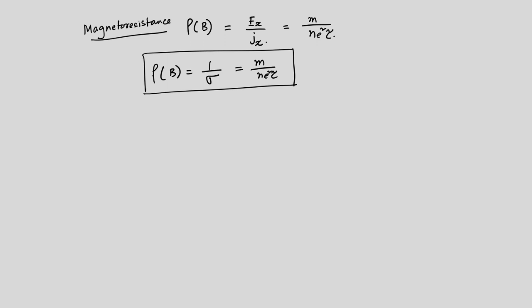The magneto-resistance ρ(B) = 1/σ = m/(ne²τ) and this is a known result. It is independent of B because at equilibrium the properties are calculated and the resistivity in the direction of current is always this value — the same as the DC resistivity or resistivity when B = 0.